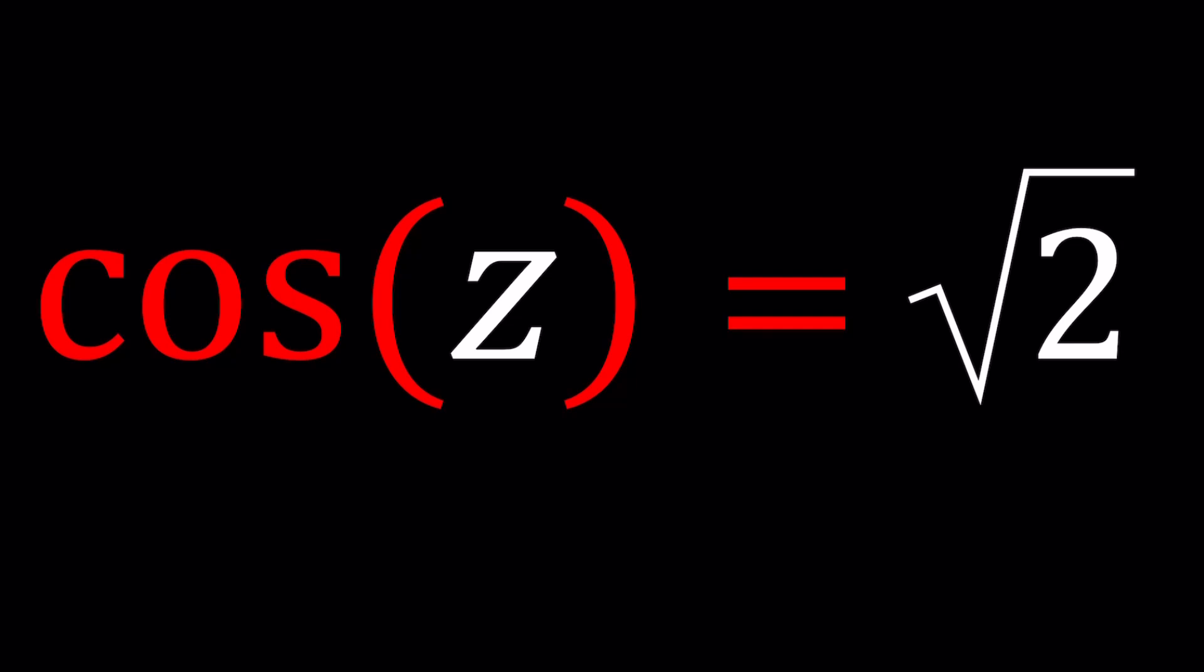Now, we're going to be looking at a couple things, including some graphs and some results from Wolfram Alpha. But before that, let's go ahead and use the famous Pythagorean identity. Sine squared Z plus cosine squared Z is equal to 1. If cosine Z is equal to root 2, when I square it, I'm getting 2 from there. So this implies sine squared Z is equal to negative 1.